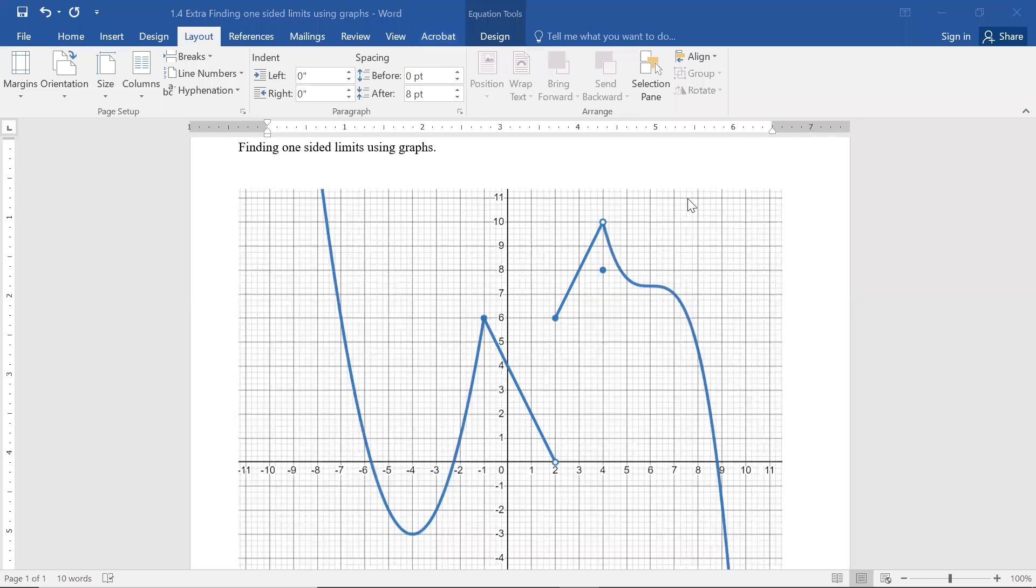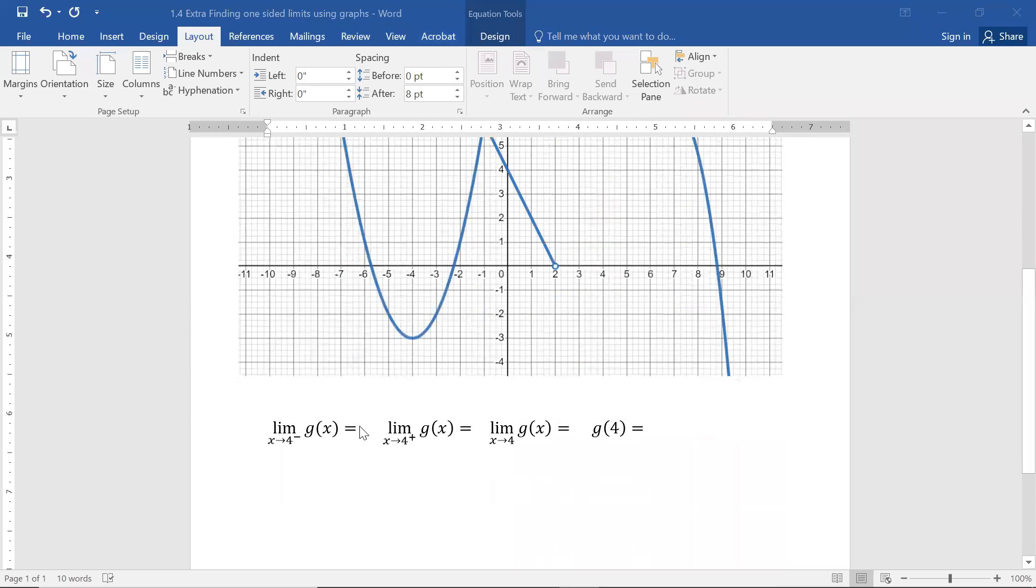Let's write that down so we have it written down. So from the left, as we approach and get closer to an x value of 4, our y value gets closer to 10. The way we write that is that the limit as x goes to 4 from the left is 10.